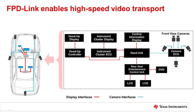FPD-Link is a multi-protocol physical layer technology that aggregates data from various industry standard protocols and transfers it over cables. It is primarily used in automotive vehicles and most commonly for digital audio-video transfer between video screens or driver assistance cameras. Some examples are shown here in these vehicle diagrams.